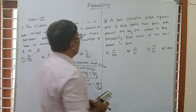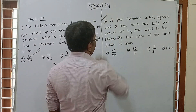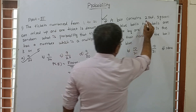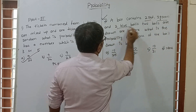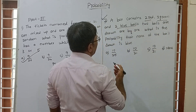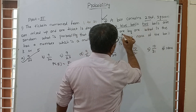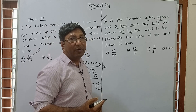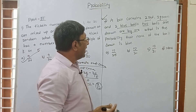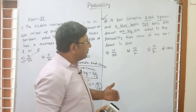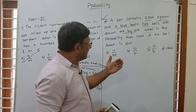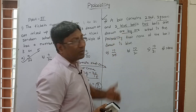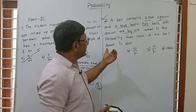Now question number 2: a box contains 2 red, 3 green and 2 blue balls. What is the probability that none of the balls drawn is blue? We are given one box with 2 red, 3 green and 2 blue balls. Total balls: 2 plus 3 plus 2 equals 7.